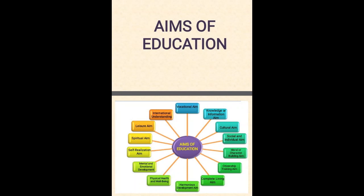Steps in formulation of educational objectives. According to Ralph Tyler, there are 9 essential steps to formulate educational objectives: 1. Identify the needs of learners. 2. Identify the needs of society. 3. Study of suggestions of experts. 4. Formulate the philosophy. 5. State the objectives gathered from various sources in a proper way. 6. Formulate the theory of learning. 7. Screen the objectives through educational philosophy and educational psychology and select the appropriate ones.